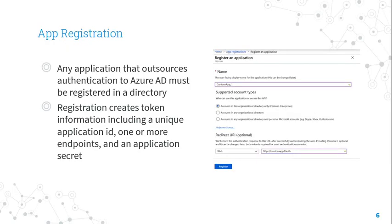Before your app can get a token from Microsoft Identity Platform, it must be registered in the Azure portal. Registration integrates your app with the Microsoft Identity Platform and establishes the information that is used to get tokens.